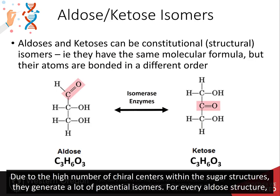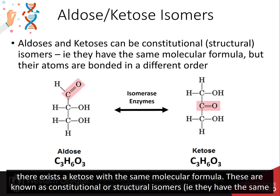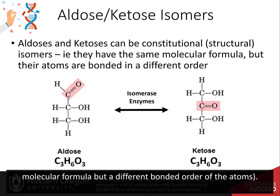Due to the high number of chiral centers within the sugar structures, they generate a lot of potential isomers. For every aldose structure, there exists a ketose with the same molecular formula. These are known as constitutional or structural isomers, meaning they have the same molecular formula but a different bonded order of the atoms.